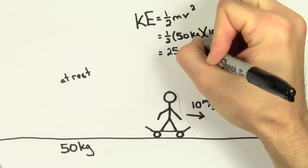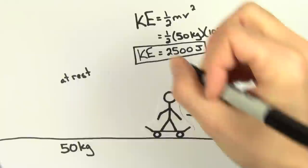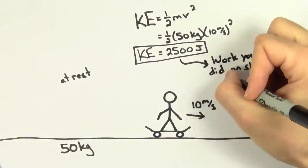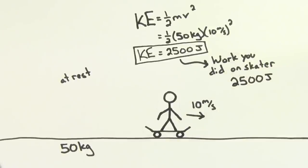The amount of kinetic energy gained by the skateboarder is 2500 joules. That means that the work done by the force on the skateboarder was positive 2500 joules. It's positive because the force gave the skateboarder 2500 joules.